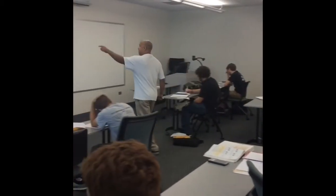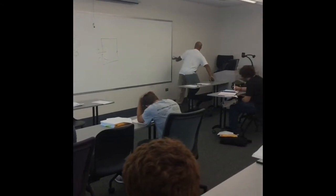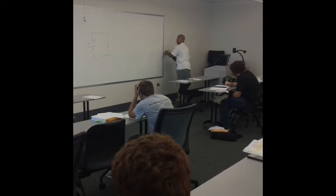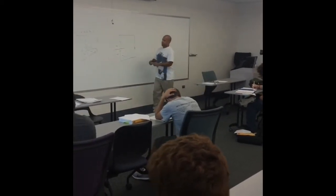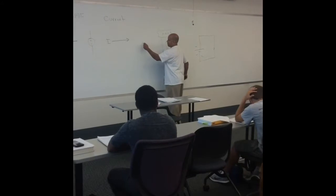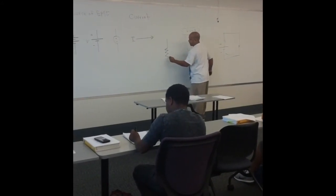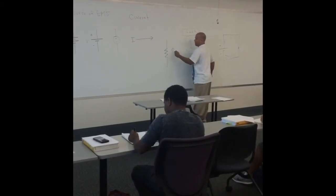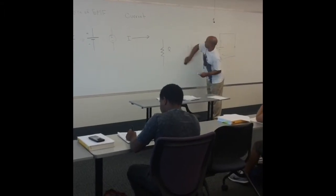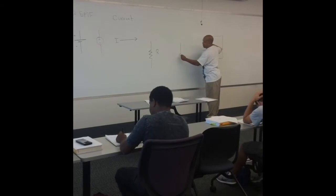So we have a graphic for voltage, a graphic for current, and you now know from lab — resistance. How do I show that? It looks like a saw blade. We'll put an R there, and you know various forms of that. We talked about that in lab.